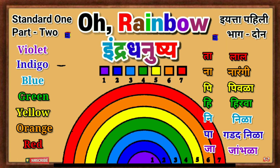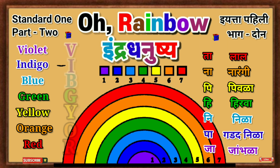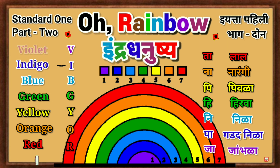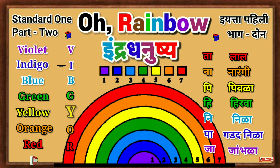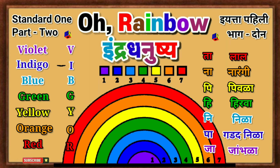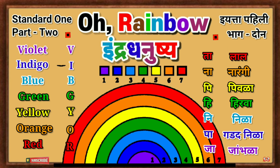Lakshat Thewa. Students, to remember these seven colors in the order of the rainbow, use these words: V-I-B-G-Y-O-R. This V means violet color, I means indigo color, B means blue color, G means green color, Y means yellow color, O means orange color, R means red color. Students, remember the order V-I-B-G-Y-O-R.